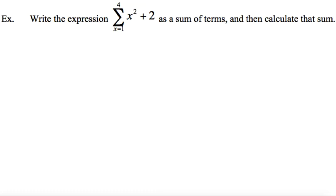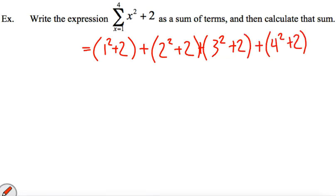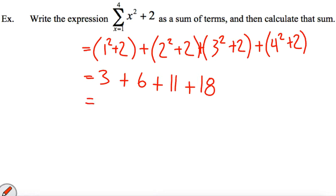If we were doing this expression — write the expression as a sum of terms and then calculate it — we go 1 squared plus 2, plus 2 squared plus 2, plus 3 squared plus 2, plus 4 squared plus 2, and add those all up. We get 3 plus 6 plus 11 plus 18, which gives us 38.